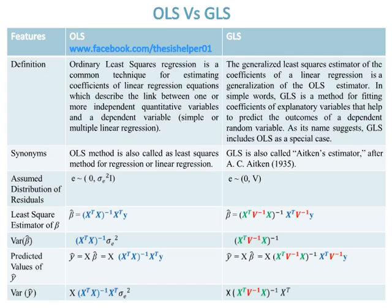In simple words, GLS is a method for fitting coefficients of explanatory variables that help to predict the outcomes of a dependent random variable. As its name suggests, GLS includes OLS as a special case. The OLS method is also called the Least Squares method for regression or linear regression, while GLS is also called Aitken's estimator, after A.C. Aitken, 1935.